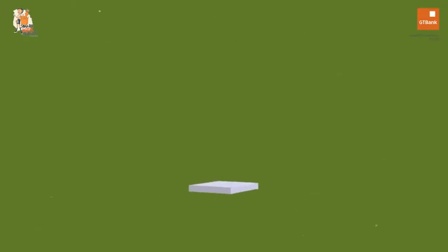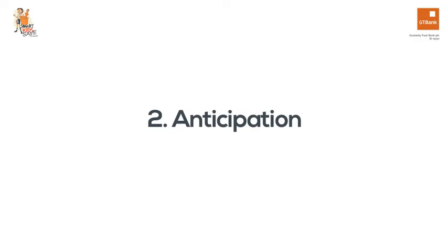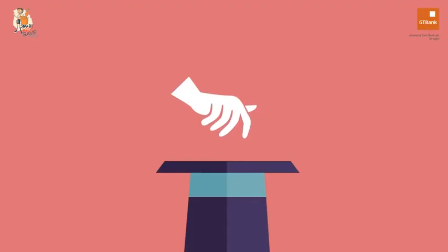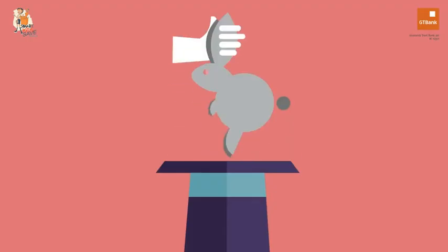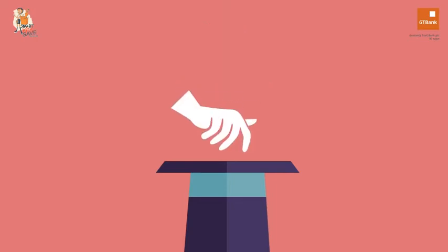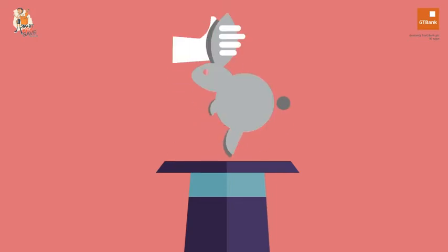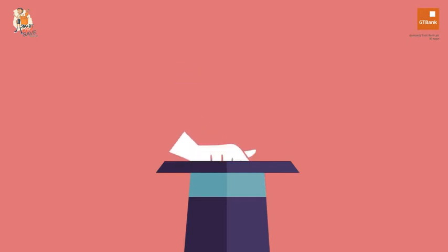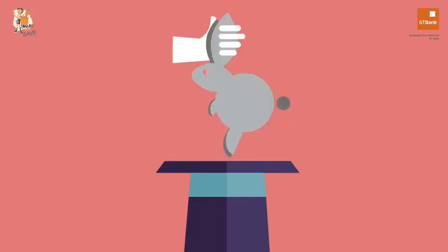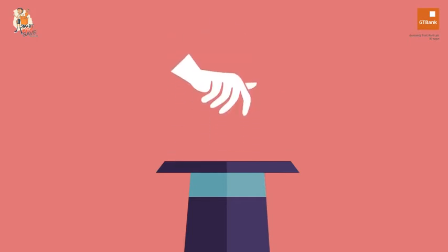Number one: squash and stretch. This gives objects a sense of volume, weight, and character as they move around on the screen. Number two: anticipation. Anticipation prepares viewers for an action that is about to happen. For instance, in this animation here, notice how the hand actually goes up before it moves down into the hat to grab the rabbit.